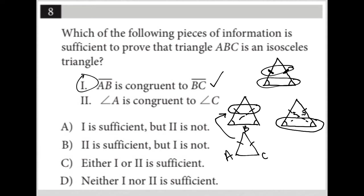And then two says angle A is congruent to angle C. So I draw another triangle with A, B, and C. Now I'm being told that these two angles are congruent. That relates to the process where if I know that two angles are congruent, that is sufficient — that is enough information for me to say that triangle ABC must be an isosceles triangle. So choice two is also correct.